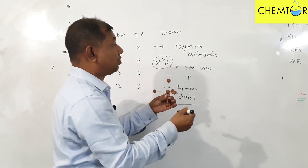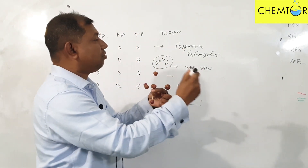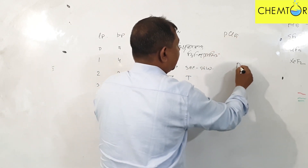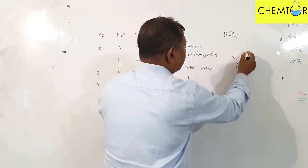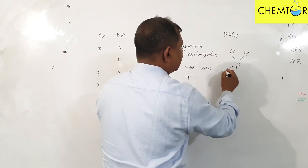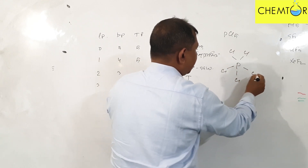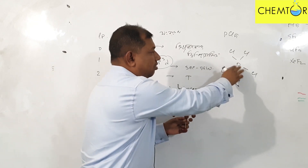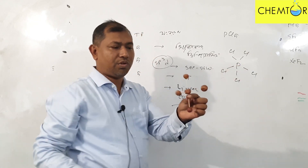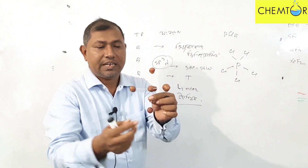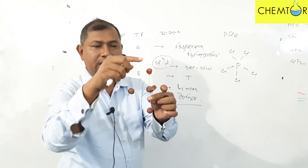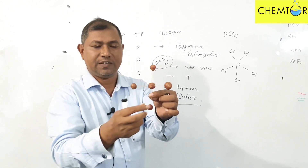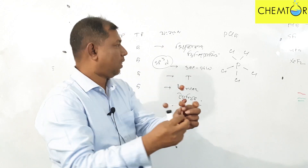In this case, we will say that it is PCl5, or Phosphorus pentachloride. Phosphorus pentachloride is connected to 1, 2, 3, 4 and 5 chlorine atoms. There is no lone pair. This is the geometrical shape — the geometrical shape of two pyramids. This is the geometrical shape of the molecule.